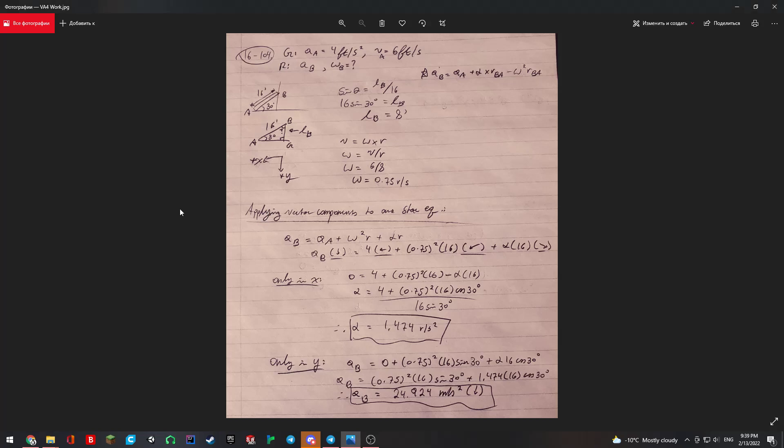Here's my solution for the fourth video assignment. I decided to do the first question, problem 16-104. The givens are that the acceleration a equals 4 feet per second squared, and the velocity at point A is 6 feet per second.